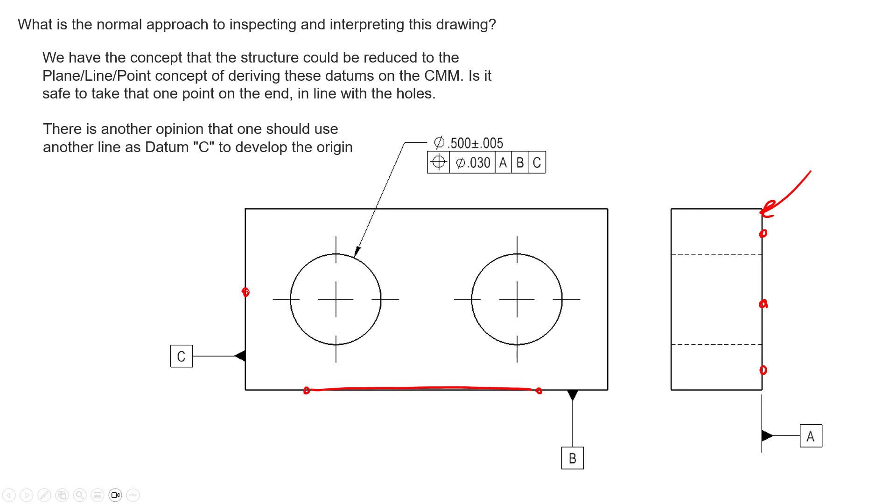A single point of contact will establish datum feature C. While you're not wrong here, and this is the bare minimum to establish a zero-zero-zero for any three mutually orthogonal planes in a CMM or in the real world, things will fall apart when we have form error on these features.